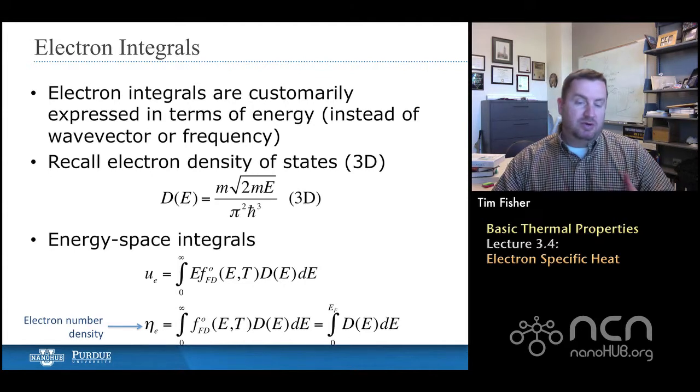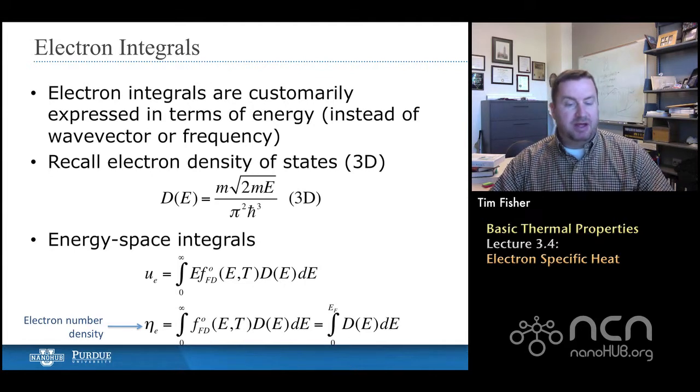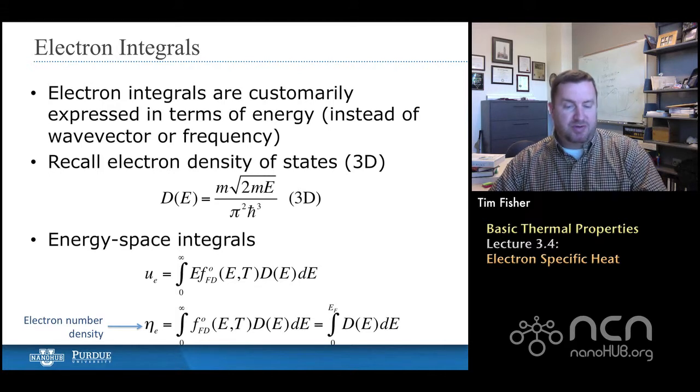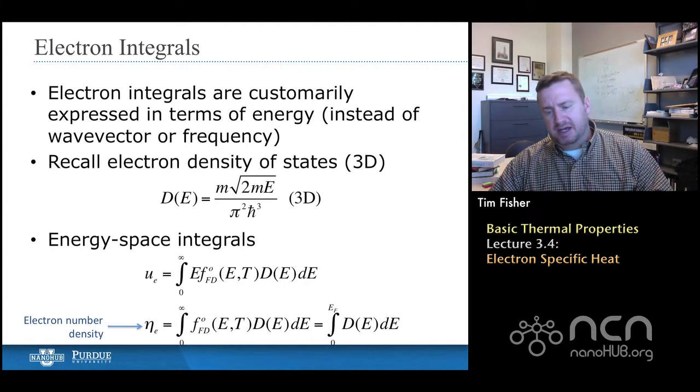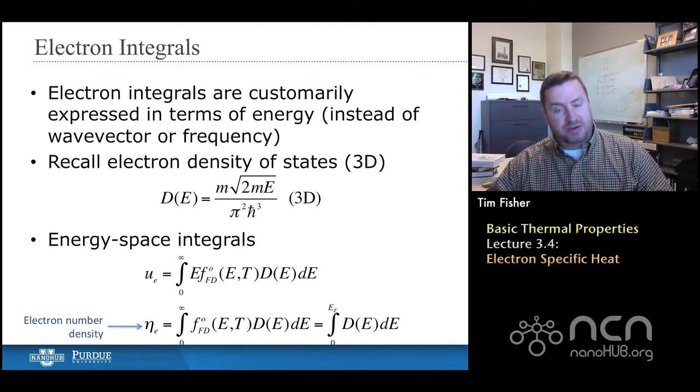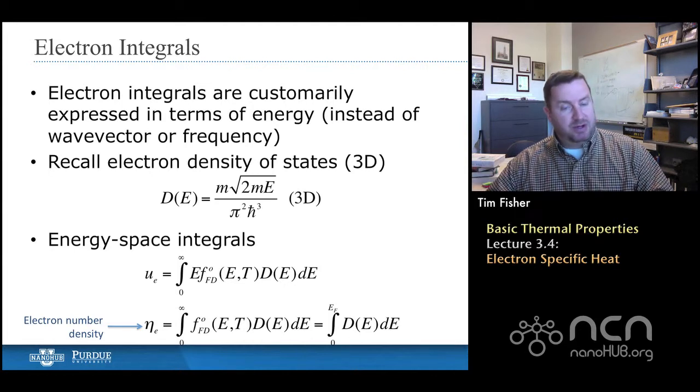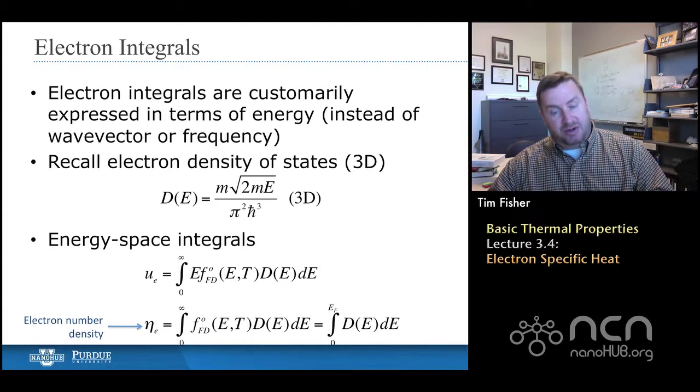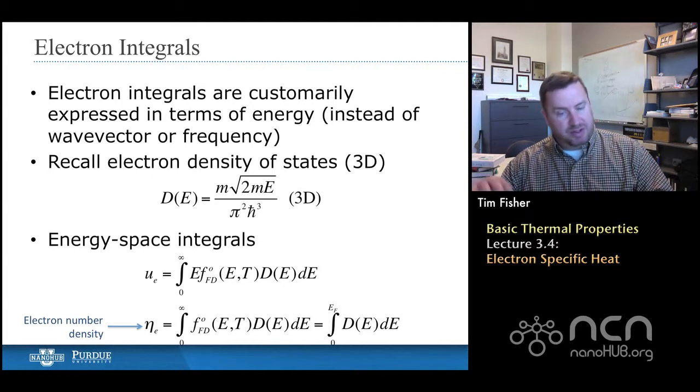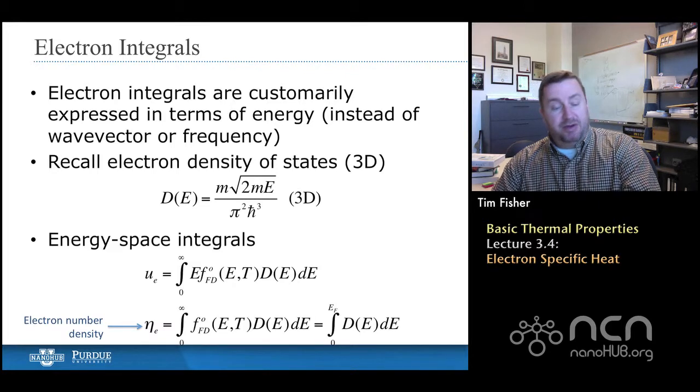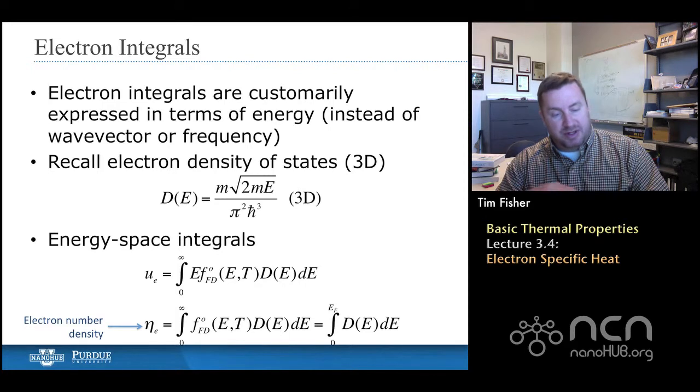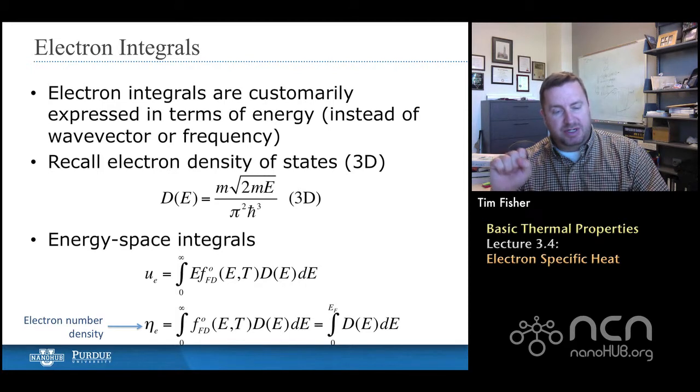We can then use this density of states, and we multiply that by the distribution function and the energy, and do an integral over energy space. What we're really doing in that process is converting the k-space integral to energy space. So if we had a three-dimensional k-space, we're converting it to a scalar space energy. That's usually much easier to do, much easier to achieve closed form solutions.